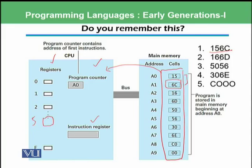And then the 6C location will be loaded into register number 6. And then this instruction is saying that you need to add whatever is found in register number 5 and 6 and store the result into register number 0. And then the result of register number 0 should be stored to 6E location. And then 6000 means the halt instruction — that we are going to end this program.